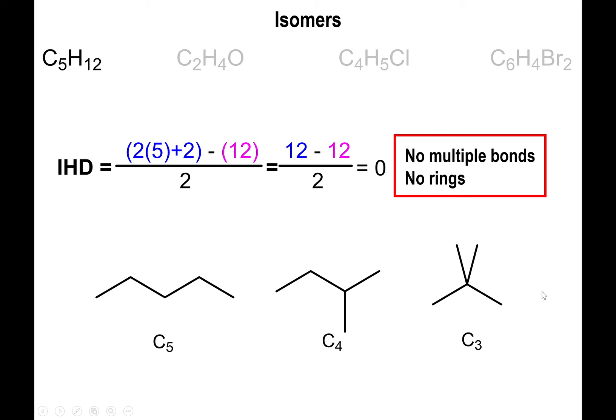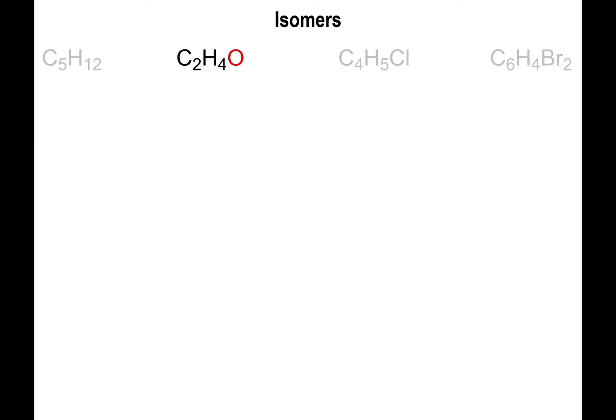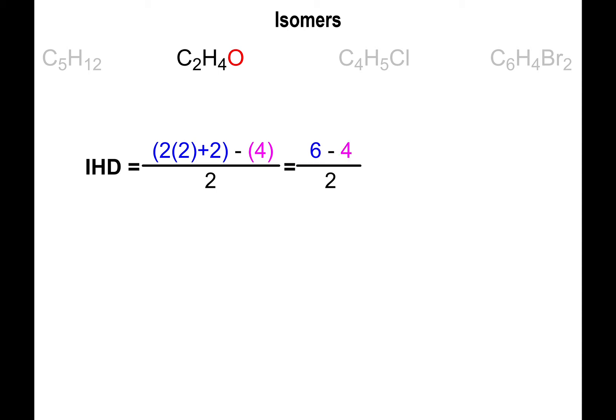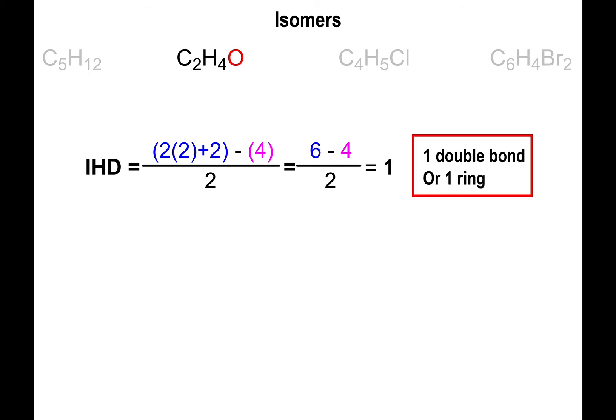All three of these molecules are unique isomers. Now let's do a harder example: C2H4O. Using the index of hydrogen deficiency, we have two carbons, so: 2 times 2 plus 2 equals 6, minus 4 divided by 2 equals 1. We have a deficiency of 1, which means we can have a double bond or a ring.